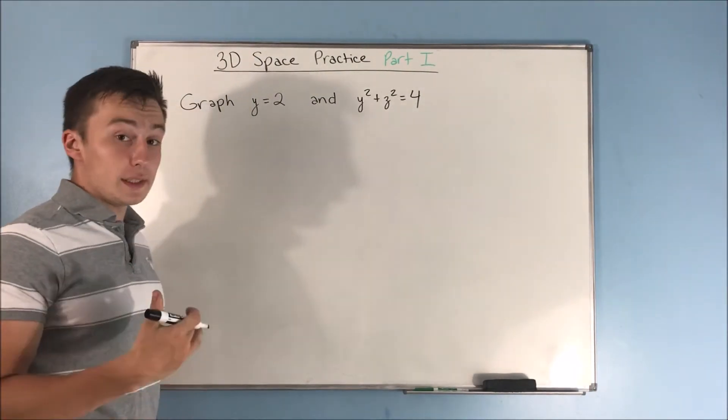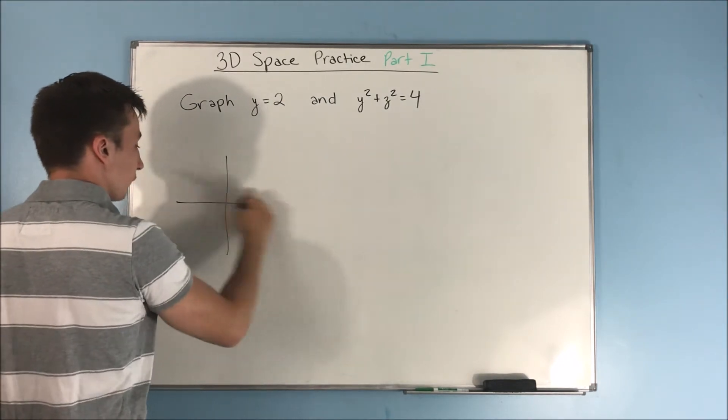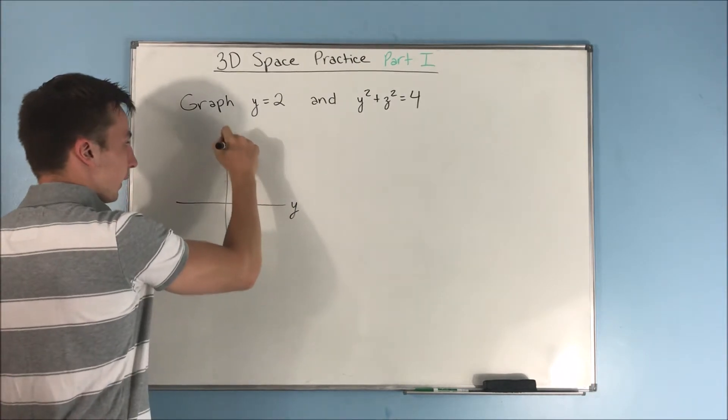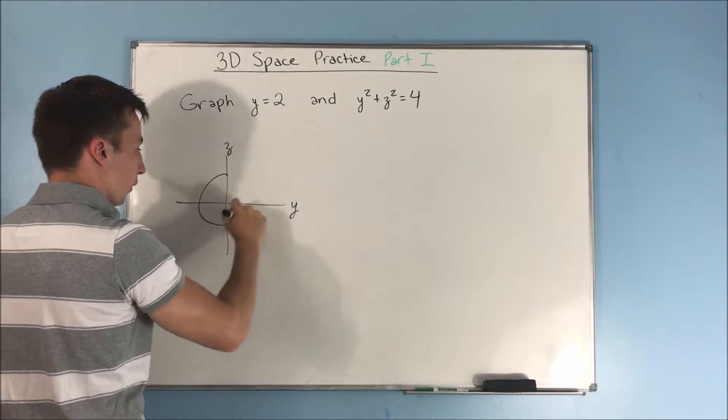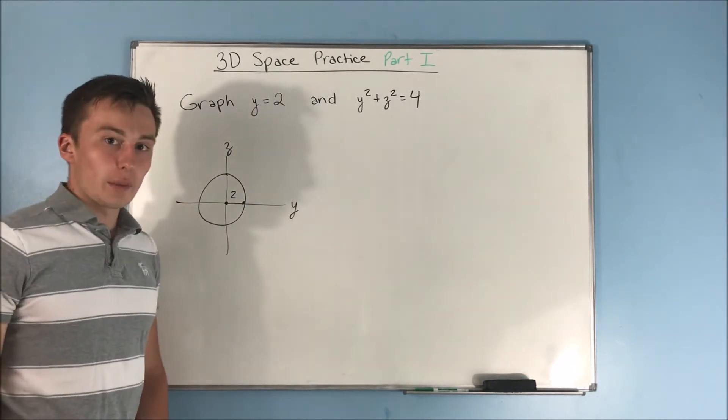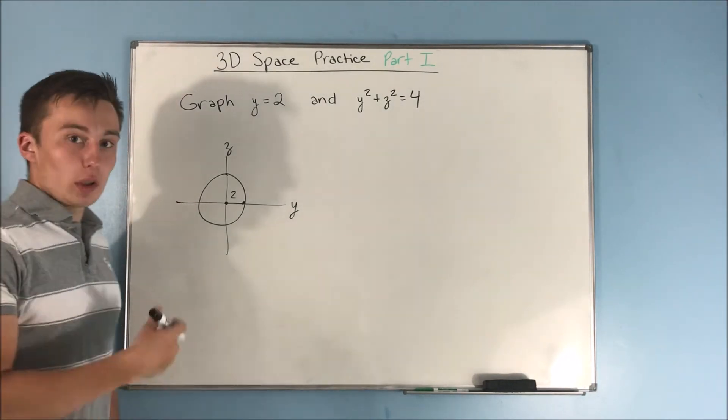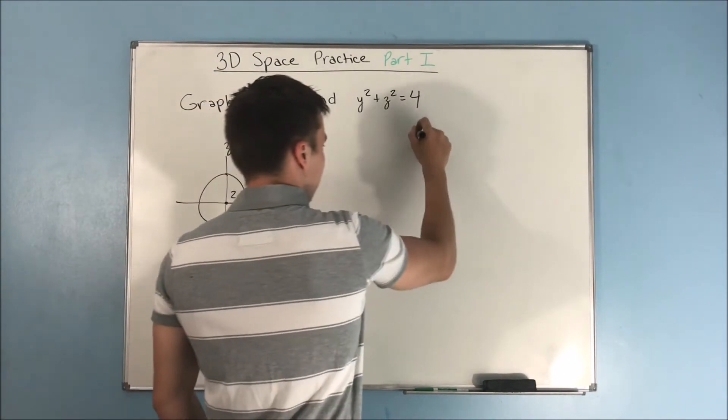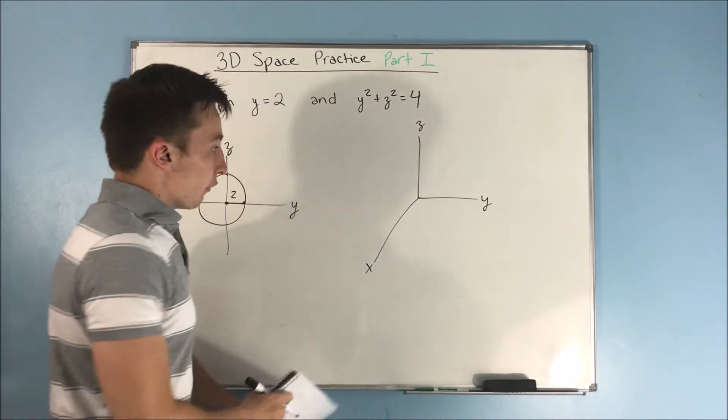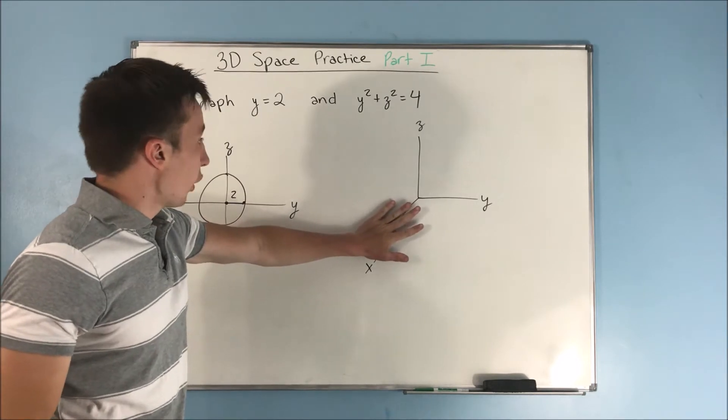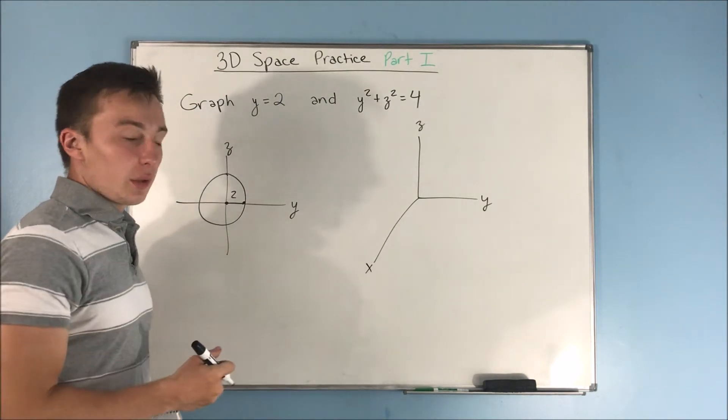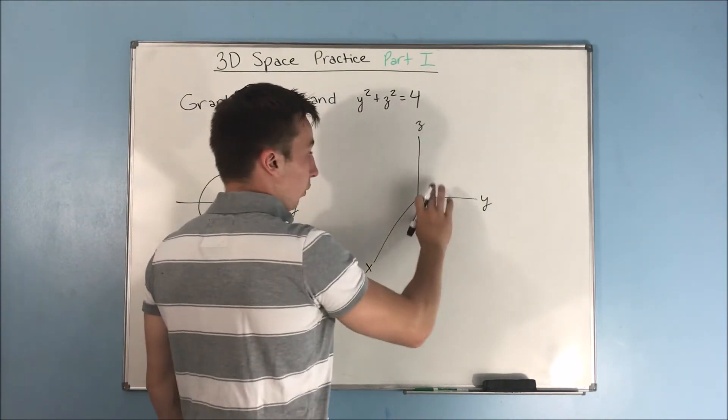So next we want to graph y squared plus z squared equals 4. Now if we were just doing this in two dimensions, we have a y here, maybe a z here. And you get a circle with radius 2. So that's what your y z plane will look like in your 3D graph. The y z plane, which if you forget about your x axis, will be basically the same exact thing here. This becomes a 2D graph, right? But now that we have this x axis, this is a circle in the y z plane.